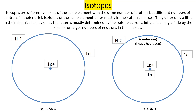To calculate the number of neutrons in a given isotope, take the mass number minus the atomic number. For hydrogen, the atomic number is one, meaning it contains one proton. So the number of neutrons in heavy hydrogen is 2 minus 1 equals 1 neutron.